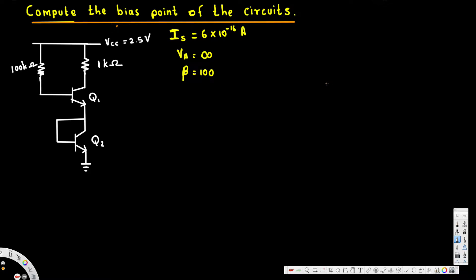Let's look at this problem. The question is asking us to compute the bias point of the circuit. We have to find the collector current IC and the collector-emitter voltage VCE. These are the two things required: IC and VCE.